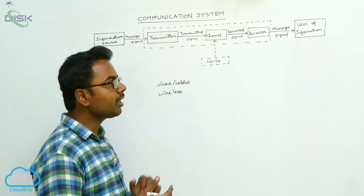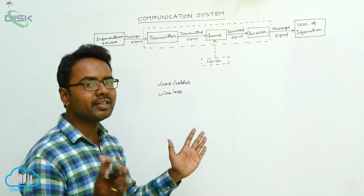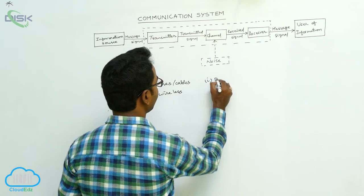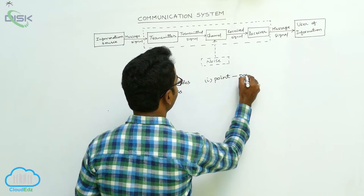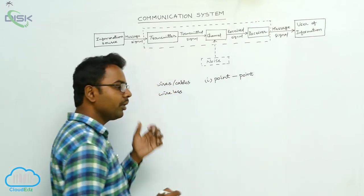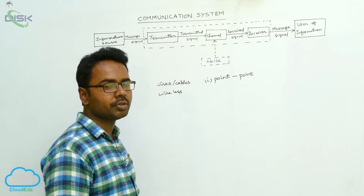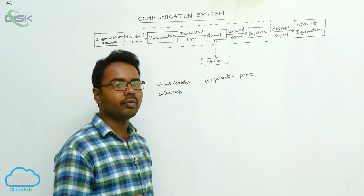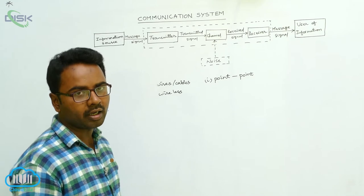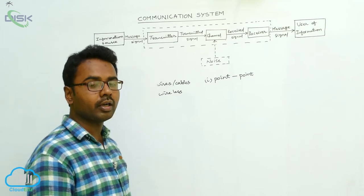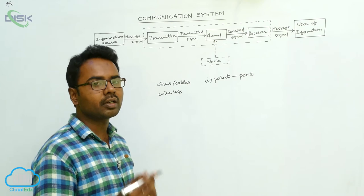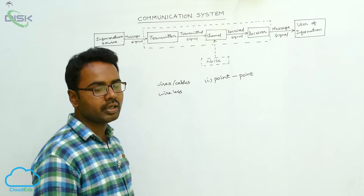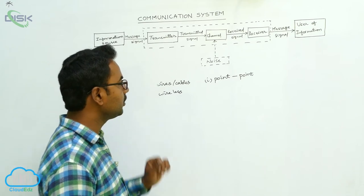Communication is of two types — there are two basic modes of communication. The first type is point-to-point communication. In point-to-point communication, for every receiver there is only one transmitter. It takes place over a link between a transmitter and a receiver. For example, in landline communication, you are the transmitter and your friend is the receiver — one transmitter for one receiver.